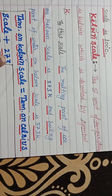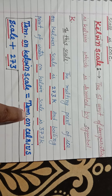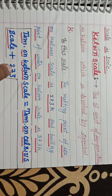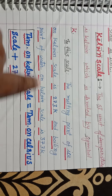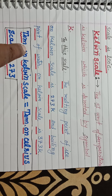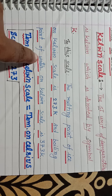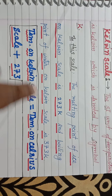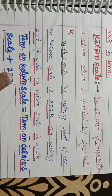Yadi Kelvin scale par temperature convert karna ho, to Celsius scale ke temperature mein 273 add kar dete hain. Is tarah Celsius scale ka temperature Kelvin scale mein change ho jaata hai. Agar koi temperature Celsius mein diya hua hai, toh plus 273 add kar denge.